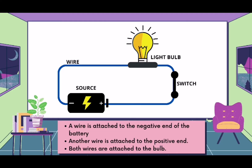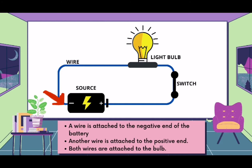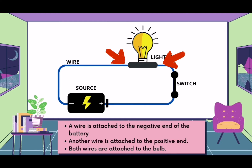We can see here how the components of a simple circuit are formed, from the source of electricity, wire, light bulb, and switch. We can observe that a wire is attached to the negative end of the battery, and another wire is attached to the positive end, while both wires from the battery are attached to the bulb.